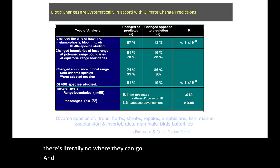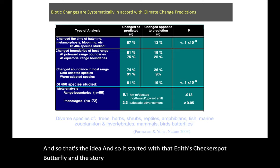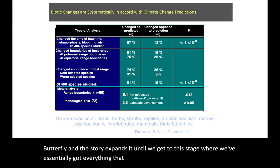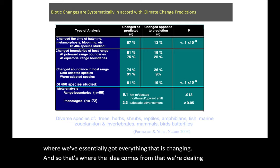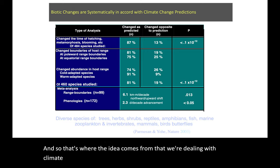Mountains are only so high, and there's only so much room before you get to the pole. Eventually for some species, they're going to run into a desert or something they can't cross. When they run into that wall and the climate keeps heating up, there's literally nowhere they can go. So it started with that Edith's checkerspot butterfly, and the story expanded until we've essentially got everything changing. That's where the idea comes from that we are dealing with climate change right now.